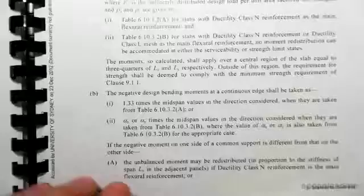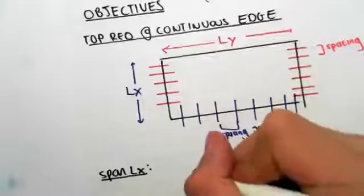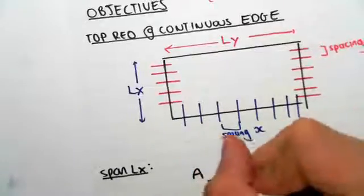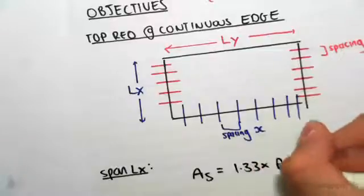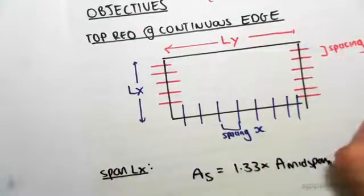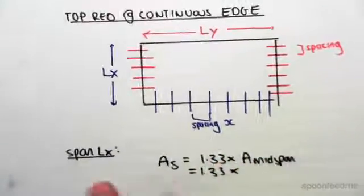And we saw for slab one, a quicker way of doing it was just multiplying the area by 1.33. So the area we need is 1.33 times the area at mid span, which is 1.33 the area at mid span parallel.